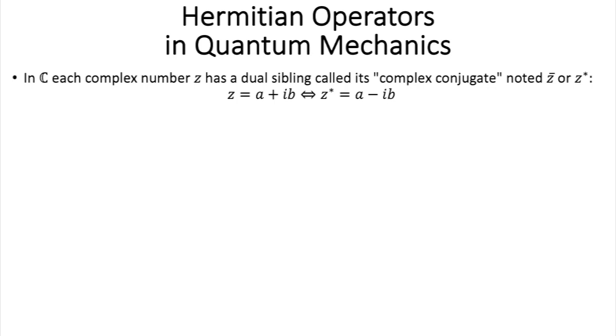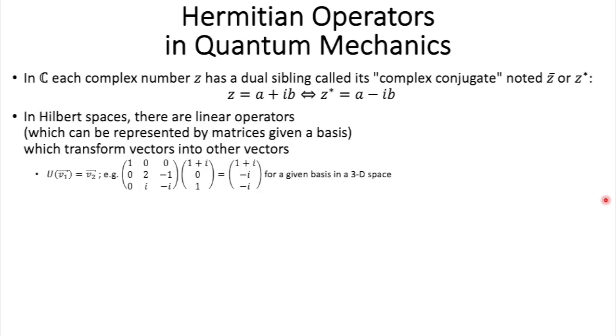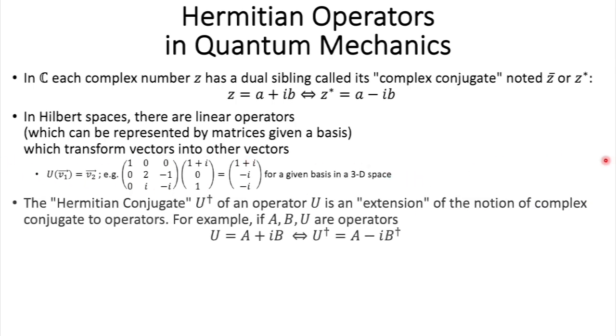In C, each complex number has a complex conjugate, and it is defined like this, as you probably know. Now, in Hilbert spaces, which are vector spaces defined over C, there are linear operators, which can be represented by matrices, of course, if you have a basis, which transform vectors into other vectors, just like that here. Now, by definition, the Hermitian conjugate of an operator U, which is called U star, well, I call it U star, but this is a dagger, but I call it U star because I'm a bit lazy. So, you can view the Hermitian conjugate as an extension of the notion of complex conjugate to operators. For instance, if U is defined like this, well, its Hermitian conjugate will be defined like that.